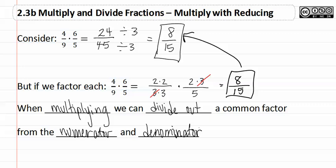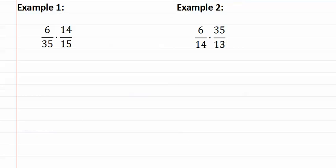Let's see this done in example one. Example one shows six thirty-fifths times fourteen-fifteenths. We can start by factoring each of these or remember if we can see ones that are in common, we can use those. If I look at both the six and the fifteen, which are the six is in the numerator and the fifteen is in the denominator, I know that both of those are divisible by three.